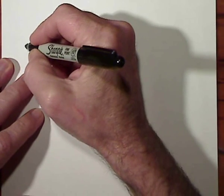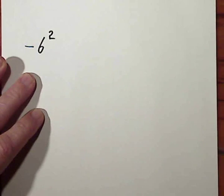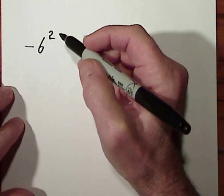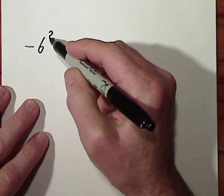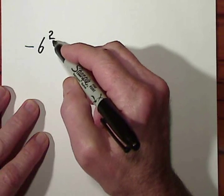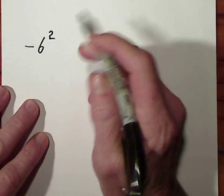If you're asked to evaluate -6², you might think that this is negative 6 to the second power, but you have to be more careful how you read the shorthand of mathematics when there's an exponent involved. The exponent's in charge, and it only applies to the very first thing it touches.